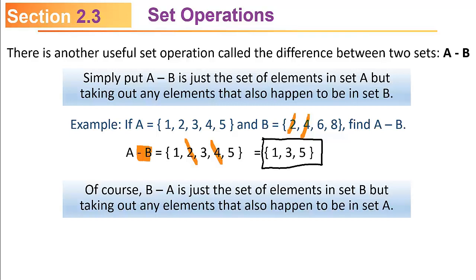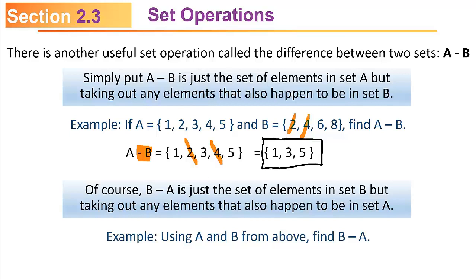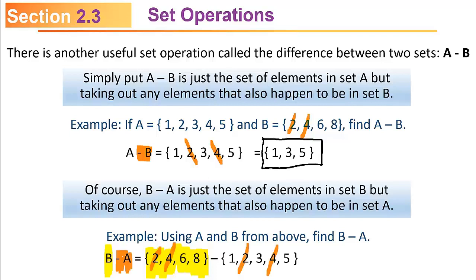For B minus A, you start with set B and take out anything also in A. B = {2, 4, 6, 8}: there is a 2 and a 4 in A so those go, but there is no 6 and no 8 in A, so B minus A = {6, 8}. Pause if you need to and go back to see the difference between A minus B and B minus A — that's the set difference operation.